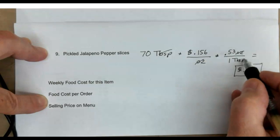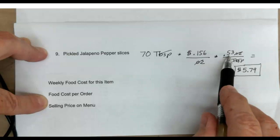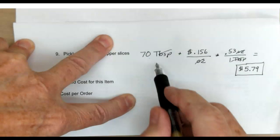So I did that, then we canceled the units and multiplied everything on the top: 70 times 0.156 times 0.53, and came up with $5.79. All the denominators were one.